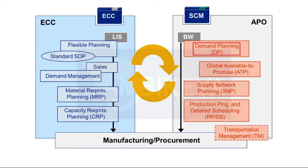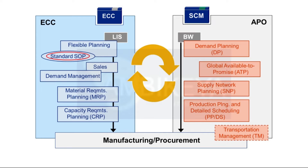Demand planning, used to derive a future demand program from demand figures in the past, can either be executed in ECC — in flexible planning, with the special case of standard SOP, or sales and operations planning — or in APO, in demand planning.